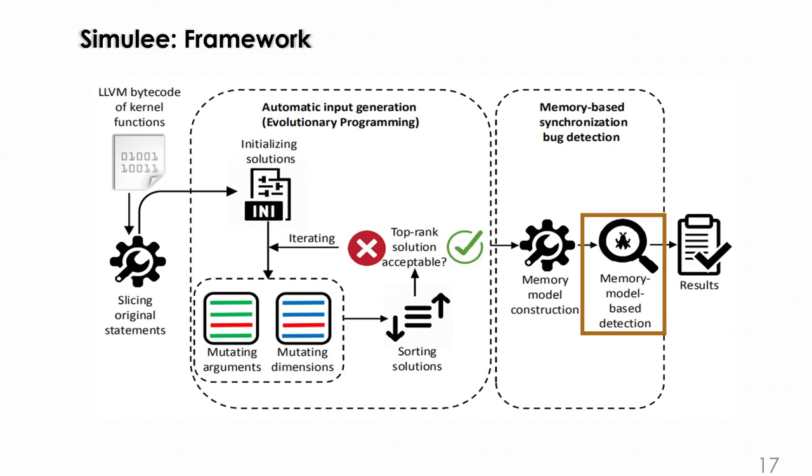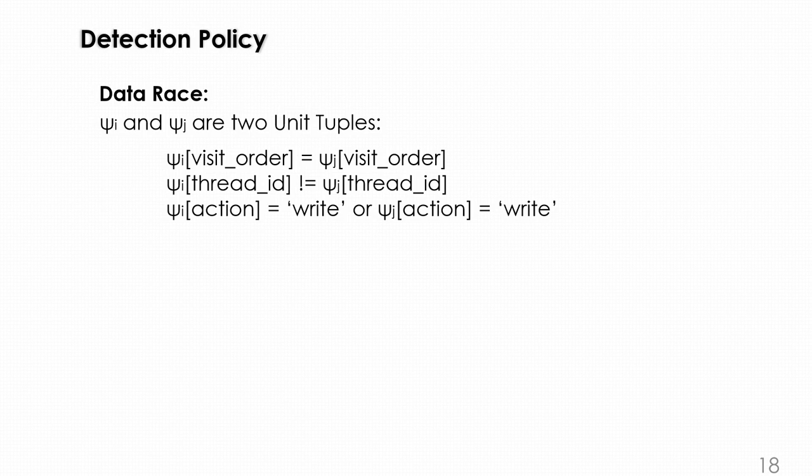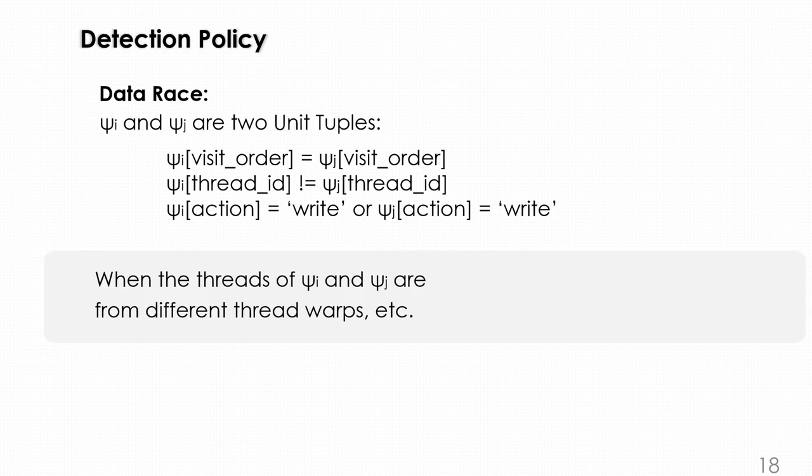After we have the memory unit, we can make the detection strategy. For data race, suppose we have ψi and ψj, two unit tuples, and the visit order is the same, the thread ID isn't, and one of them has write actions. When the threads for ψi and ψj are from different thread warps, they actually have a data race. There are multiple situations here, but I suggest you revisit the paper to find out more details.